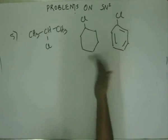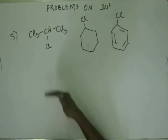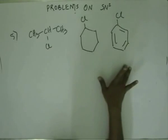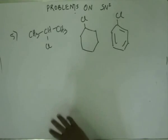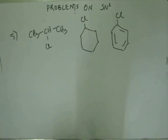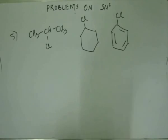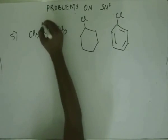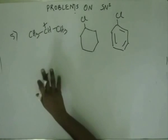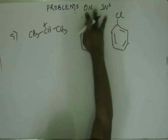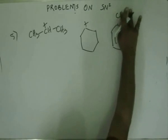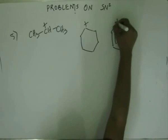We will have to remove the leaving group as it departs and draw the corresponding intermediate that will be formed, and then reason out the order of stability of those intermediates. So if Cl⁻ goes off from here, you will have a plus charge left behind on the carbon. Same would happen here, and if it happens on the third substrate, then the plus charge will come on that carbon.